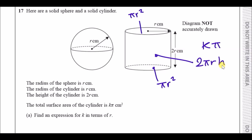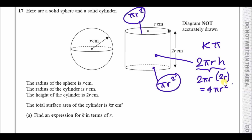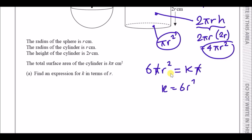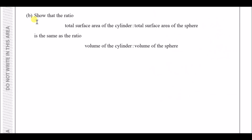Since the height is 2r, the curved surface area becomes 2πr × 2r = 4πr². Adding all three parts: πr² + πr² + 4πr² = 6πr². Since this equals kπ, we can divide both sides by π, giving k = 6r².